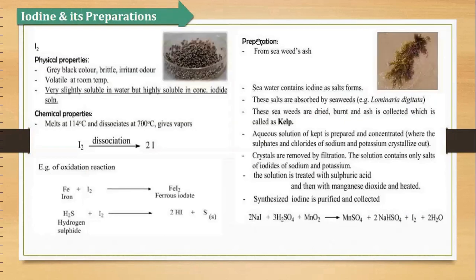Then are the iodine and its preparations. Iodine ka formula hai I₂. It is a grey-black color brittle irritant odor compound which is volatile. Matlab isko agar aap iodine balls ya granules ki tarah rakhoge to agar isko aap hawa mein rakhoge to yeh ud jayegi — easily volatile at room temperature. It is slightly soluble in water but highly soluble in concentrated iodide solution. Paani mein yeh dissolve nahi hoti, lekin agar potassium iodide ka solution le lenge to usme yeh easily dissolve ho jayegi.